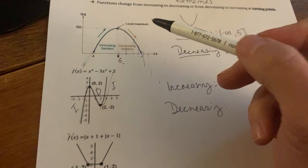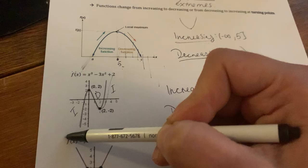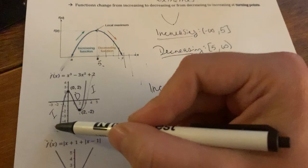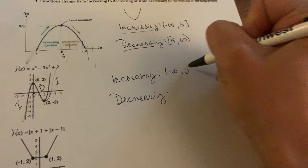So here, from negative infinity, so like say negative ten, you'd have an output. Negative five, you'd have an output down here. But you'd be increasing as you go higher. So you're increasing from negative infinity, all the way to what x value? Zero. Because we're not talking about the y's, we're just talking about the x's. So you're increasing from negative infinity to zero.